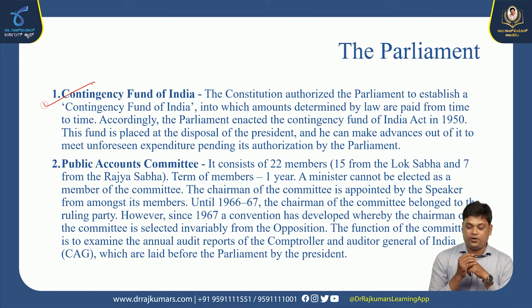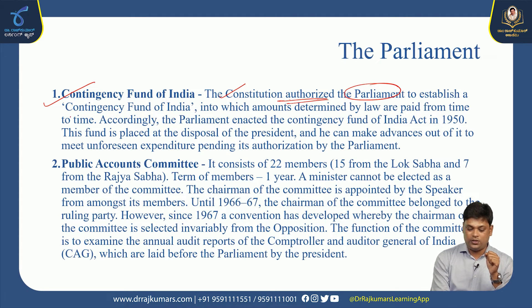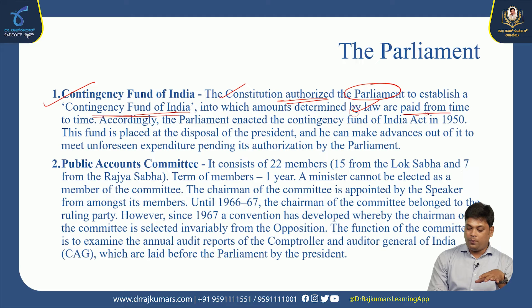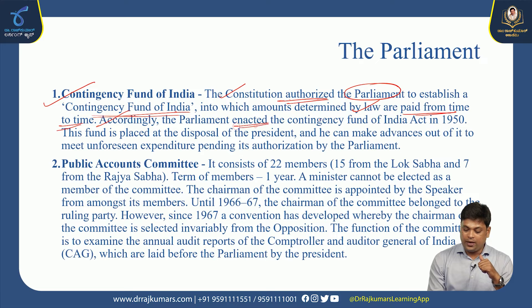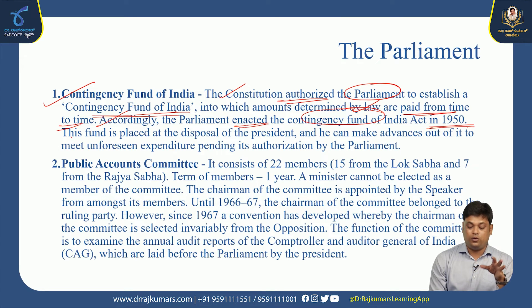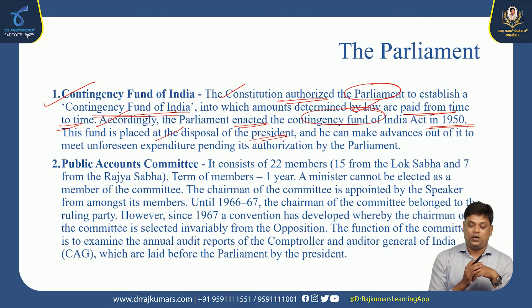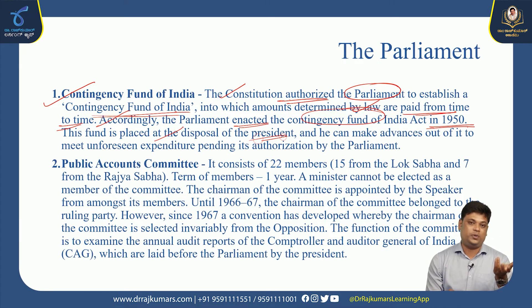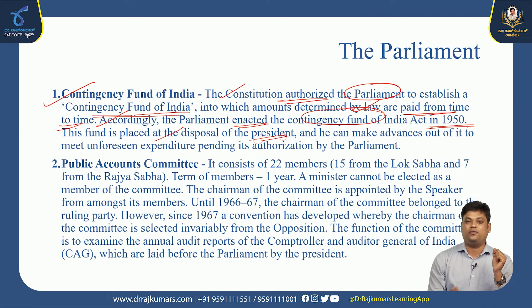The Contingency Fund of India is established by the Parliament through the Contingency Fund of India Act of 1950. This fund is placed at the disposal of the President, who can make advances for unforeseen expenditures such as natural calamities. Money is taken from the Contingency Fund of India as needed, and it is released by the President of India.